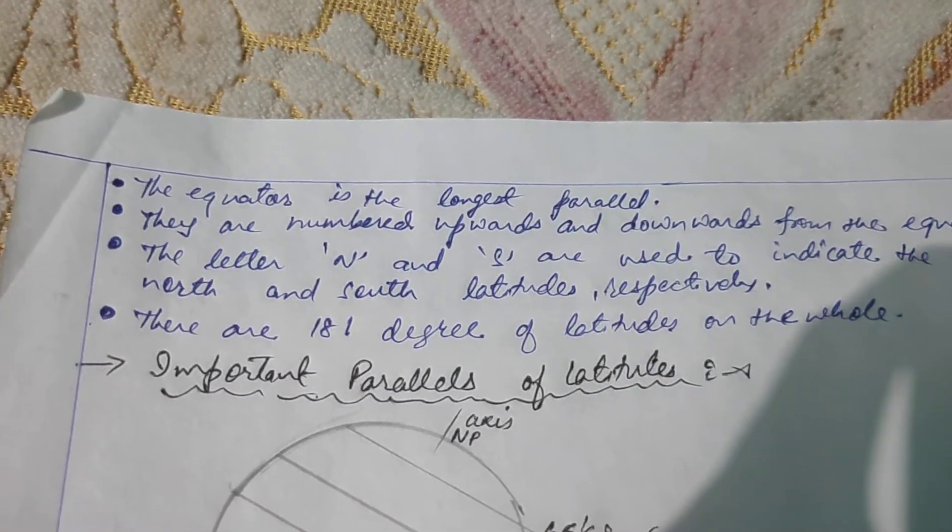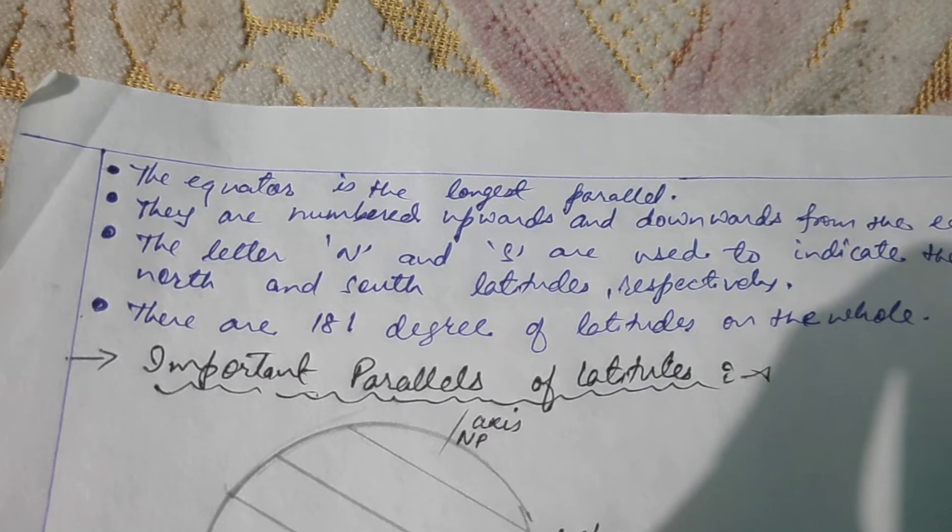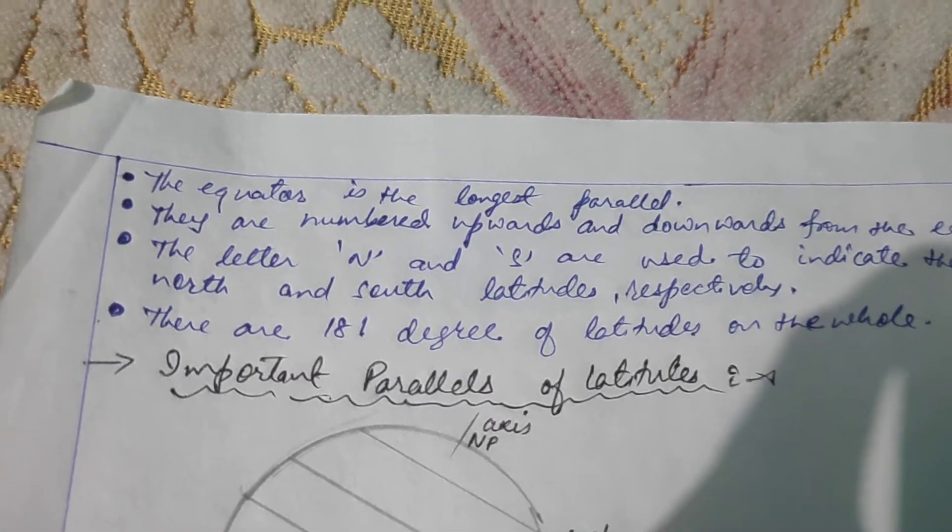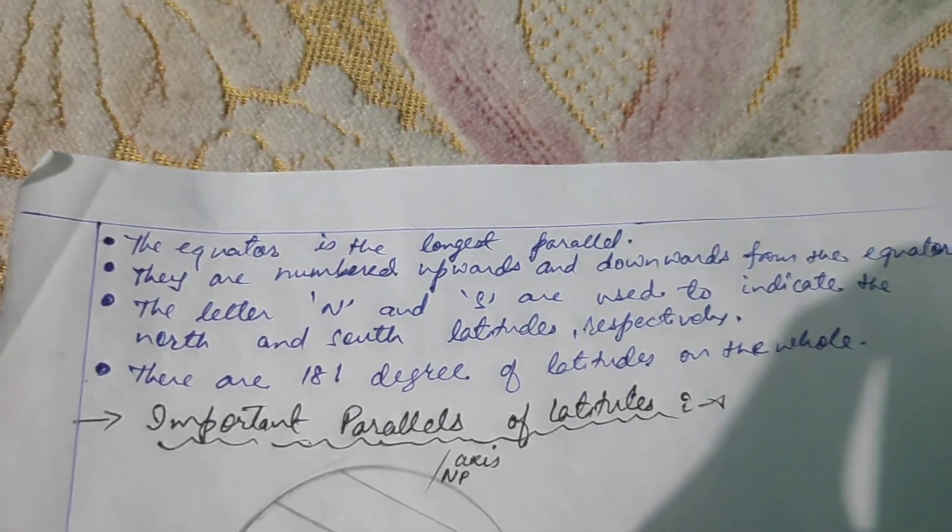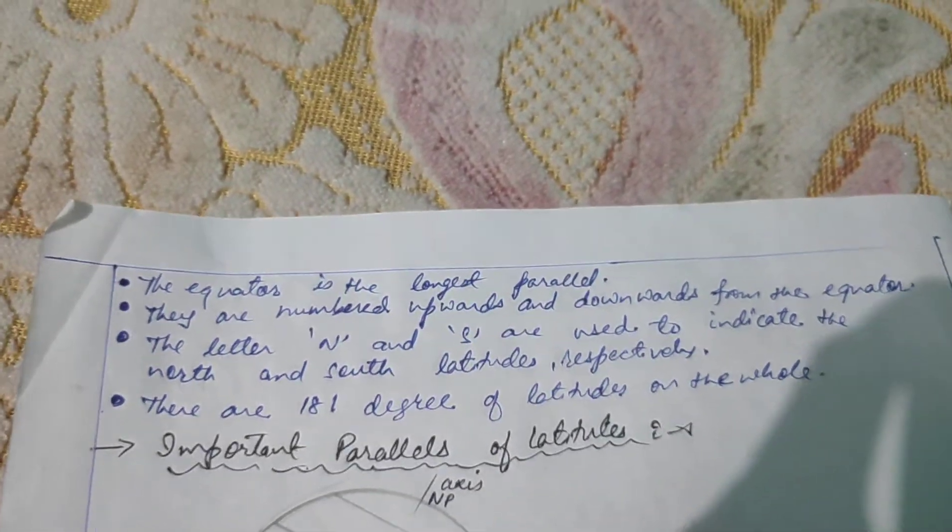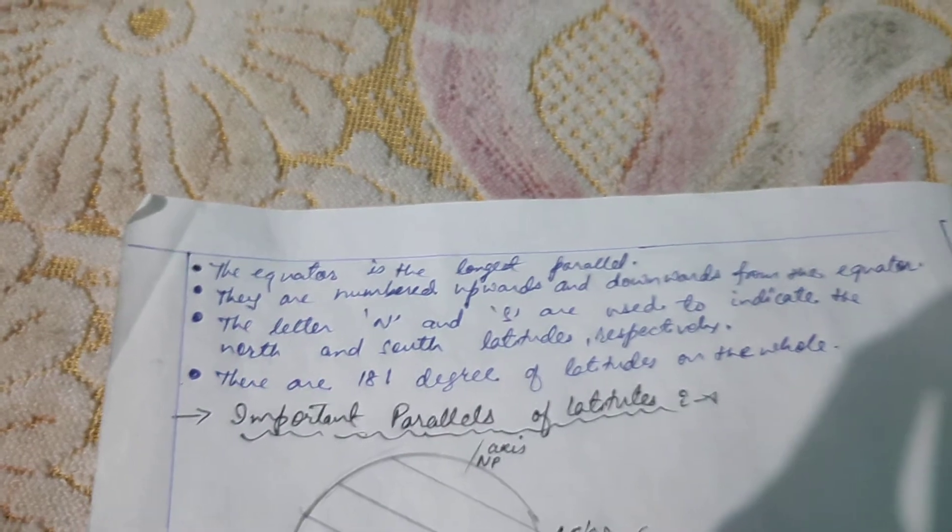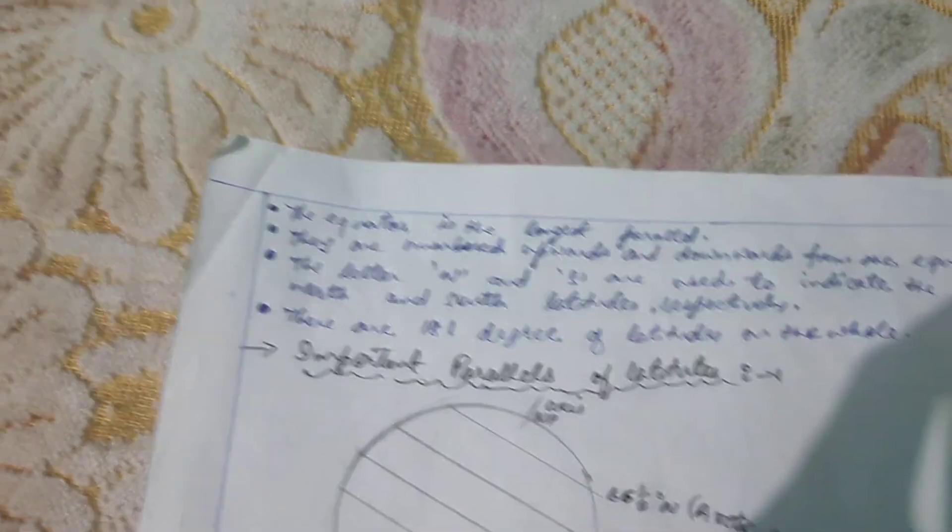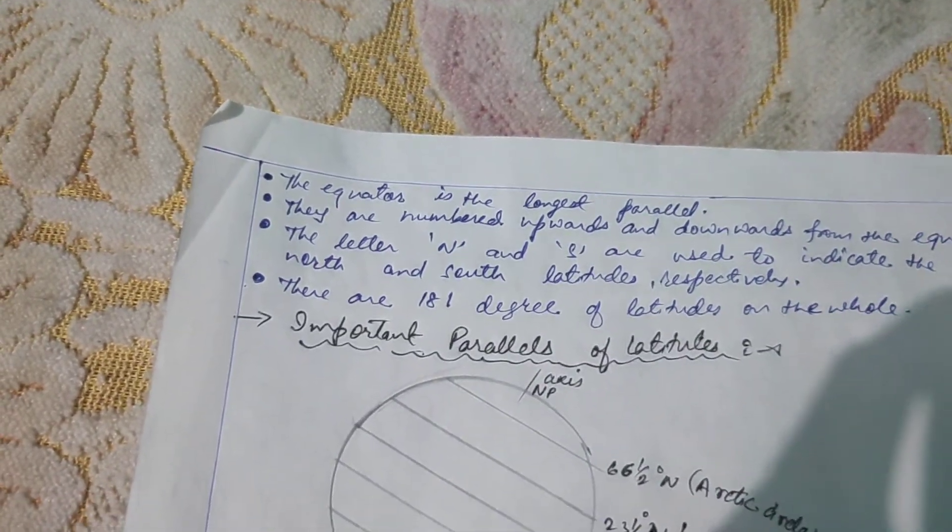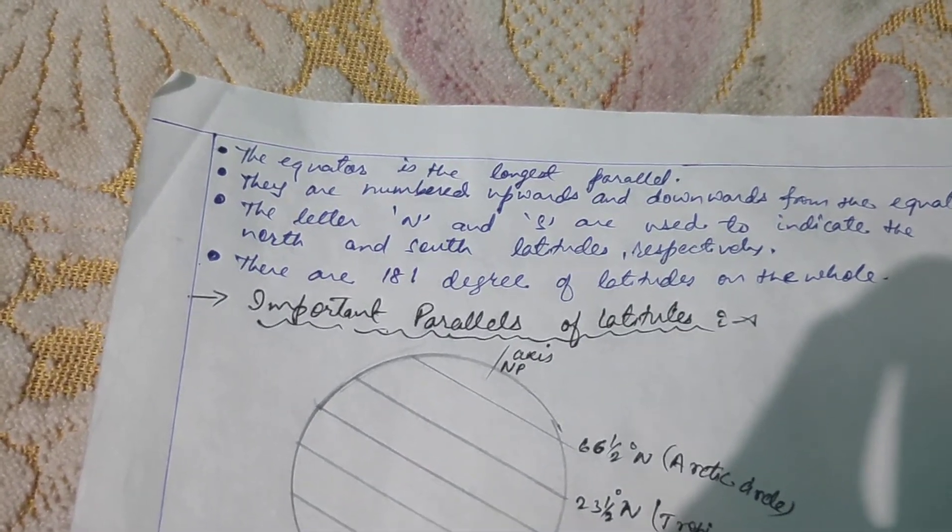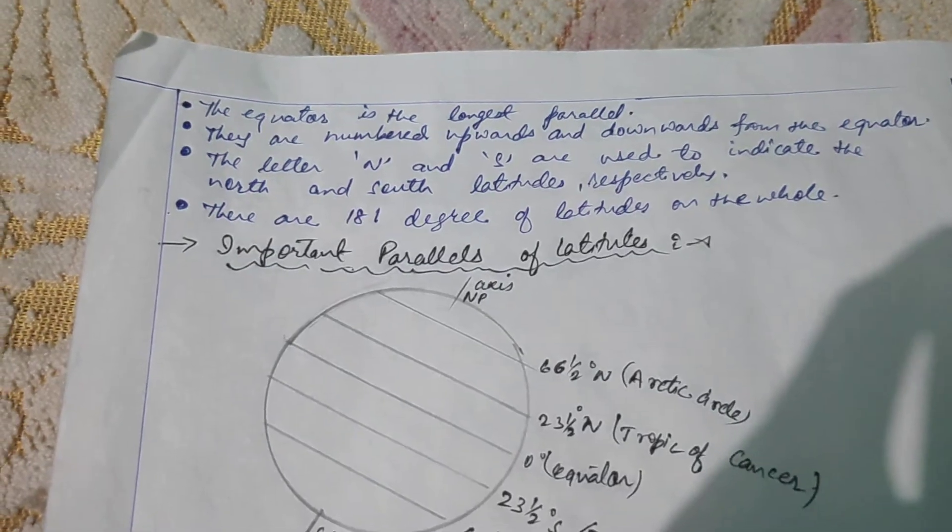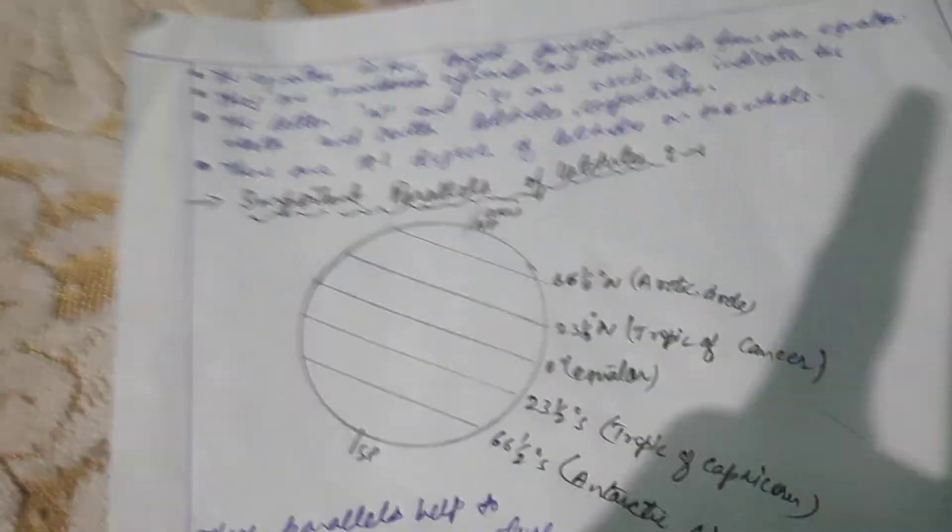Another characteristic is that the letters N and S are used to indicate north and south latitudes respectively. There are total 181 degrees of latitudes on the whole: 90 degrees in the northern hemisphere, 90 degrees in the southern hemisphere and the equator. Among this total 181 degrees of latitude, there are some important parallels of latitude also.